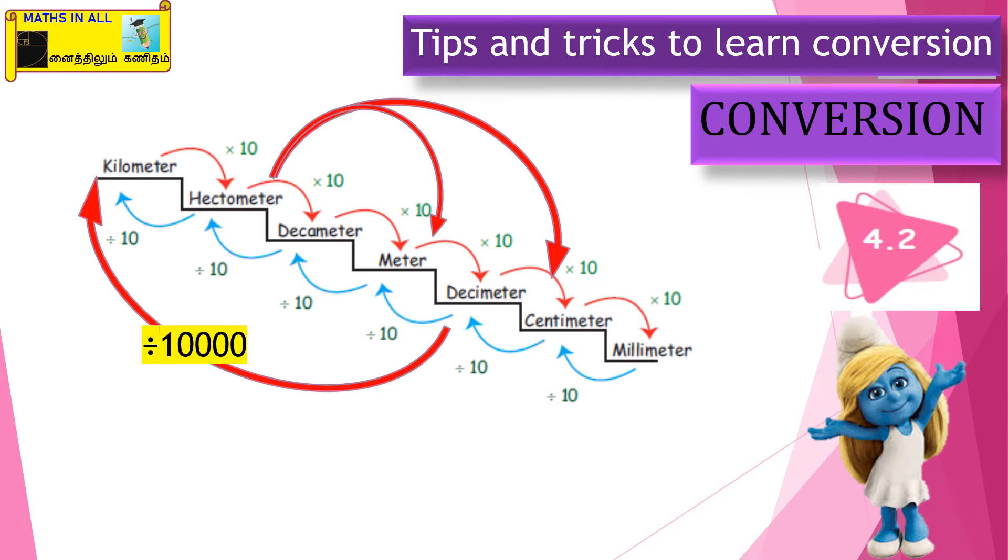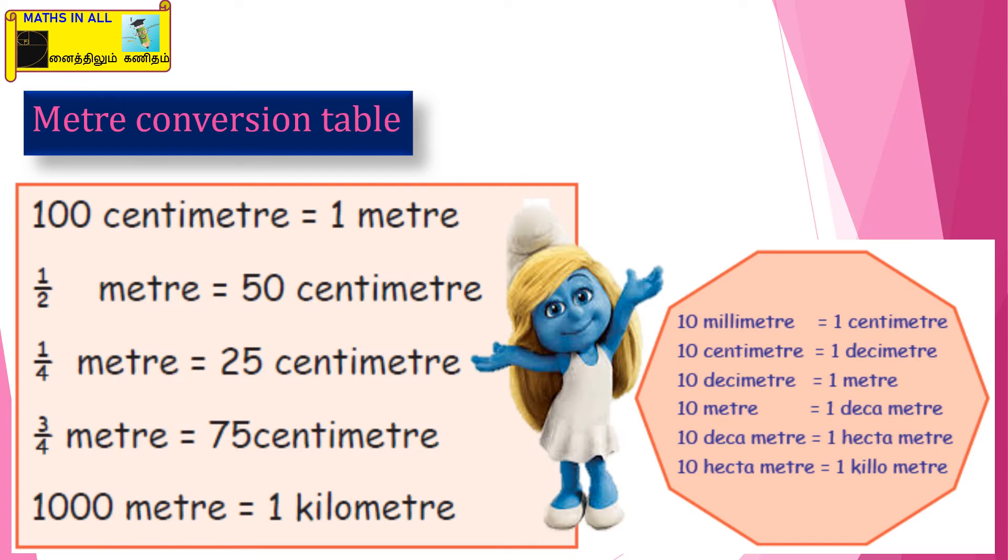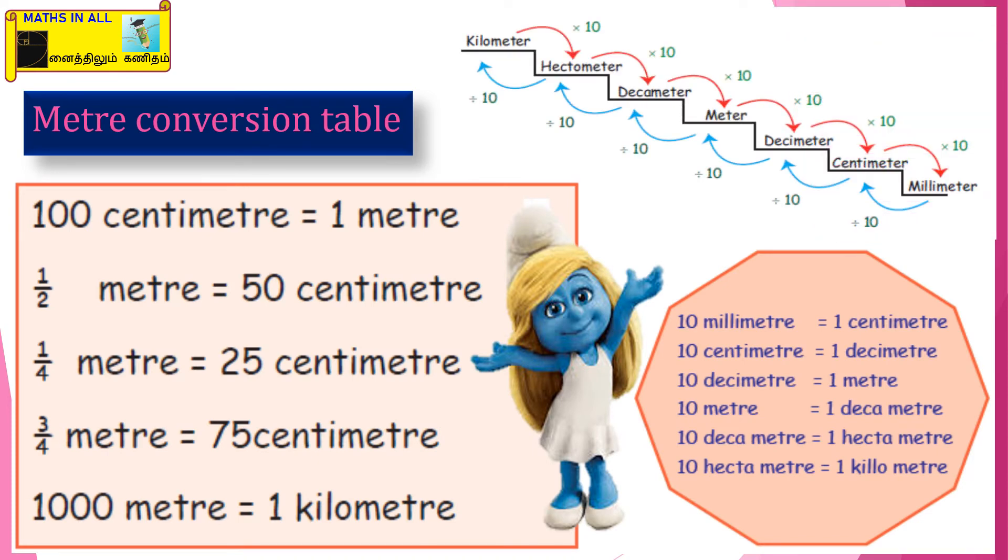Meter conversion table - this we know, so just look at this: 10 millimeter equal to one centimeter, 10 centimeter equal to one decimeter. See here, millimeter to one centimeter, then 10 centimeter equal to one decimeter. So smallest unit and largest unit will come under 10, 10, 10 only, this side one times only, right?